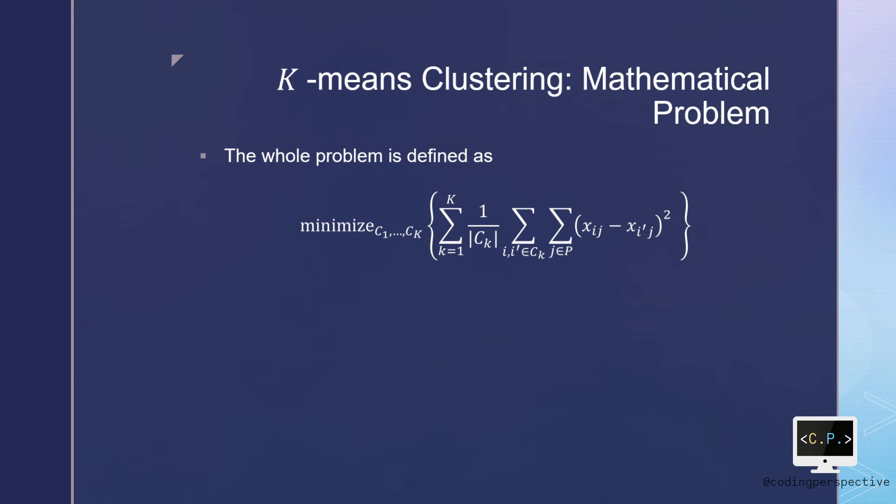If we combine these two notations, this gives the optimization problem that defines k-means clustering. Minimize over K clusters the sum of all clusters 1 over |CK| summed over all observations in the kth cluster over all features (xij minus xi'j) squared. It is both a quadratic problem and a partitioning problem. Hence, it is certainly not an easy problem to solve. Therefore, we can use a heuristic algorithm to solve this problem.